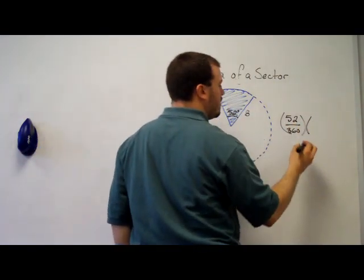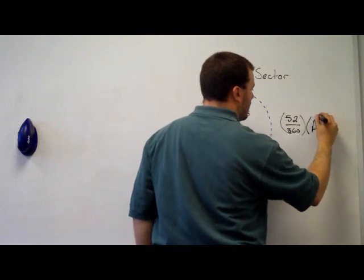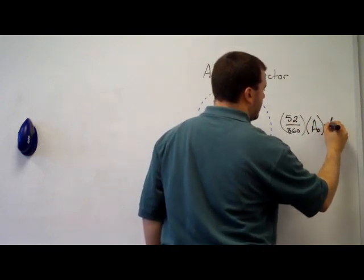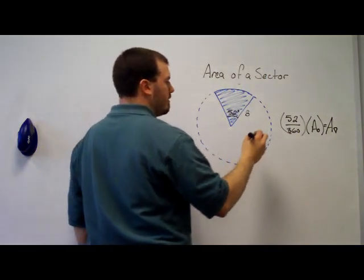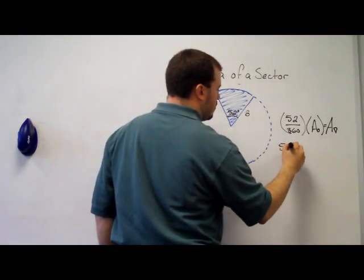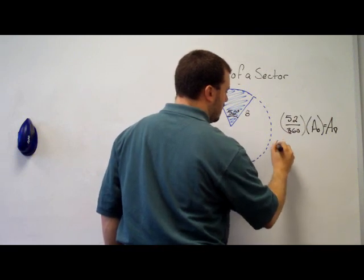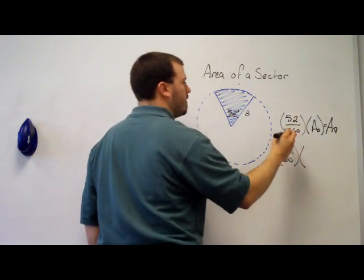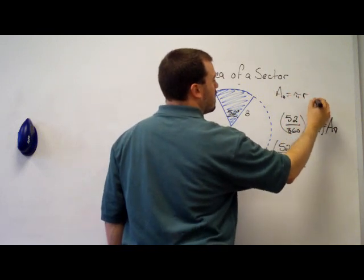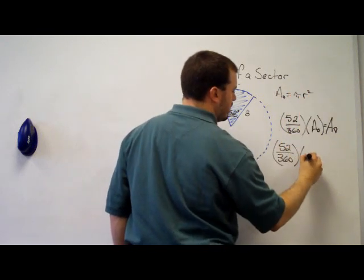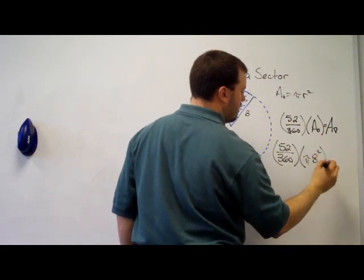times the area of the circle, and that's going to give us our area of the sector. So in this particular case, it's 52 divided by 360, times—and remember, area of the circle is pi r squared—so pi times 8 squared,